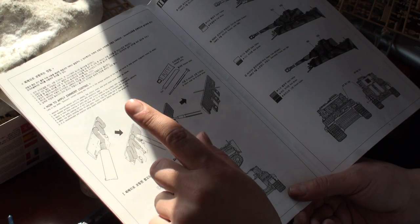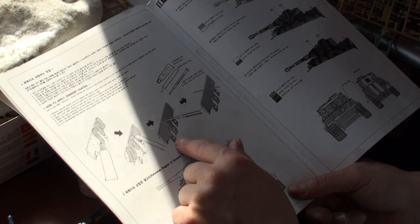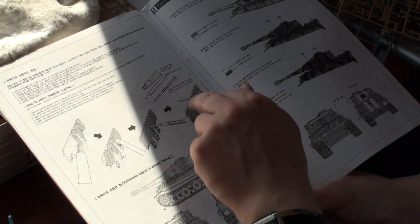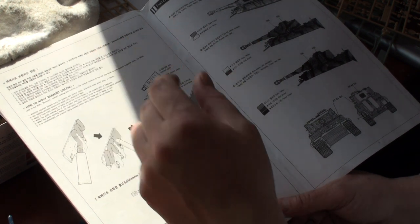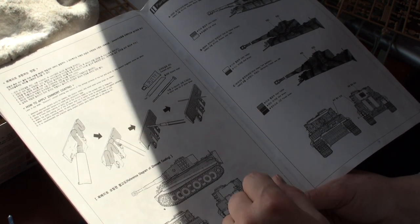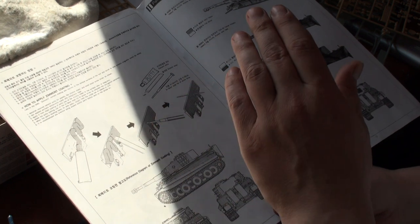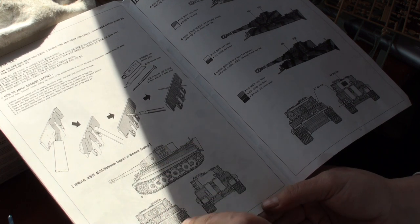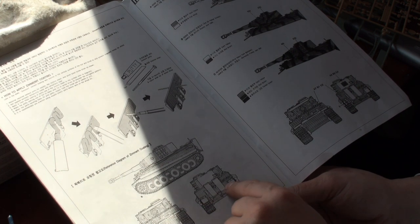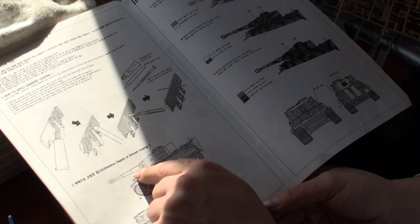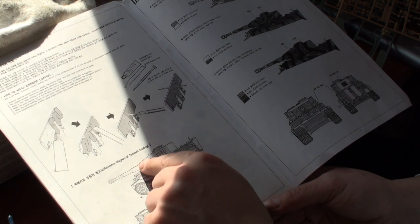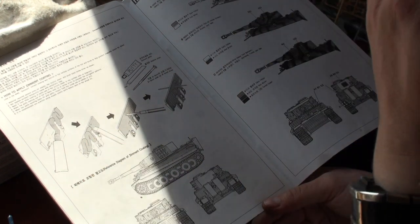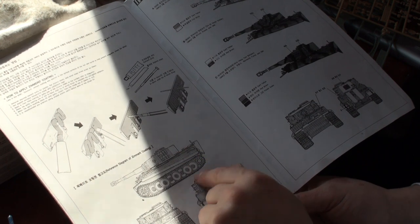Here they tell you how to apply the zimmerit because you can see in this last picture you have to open up the holes again with a needle or another sharp object. So I better do this first because the entire tank needs to have that zimmerit coating. The front, the back and the side panels. And later on the side panels of the turret which are now in two parts. So I have to do that later.